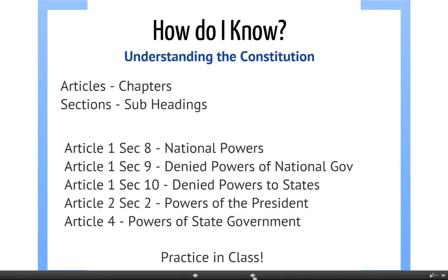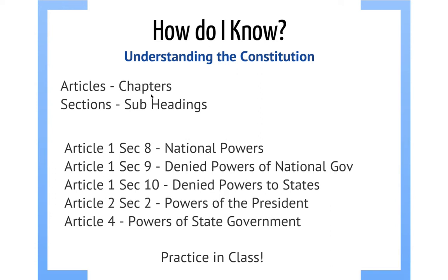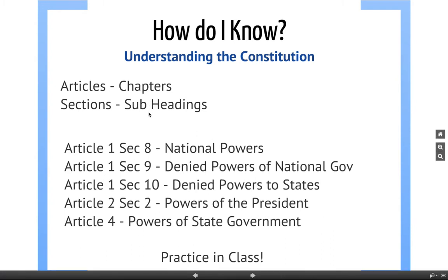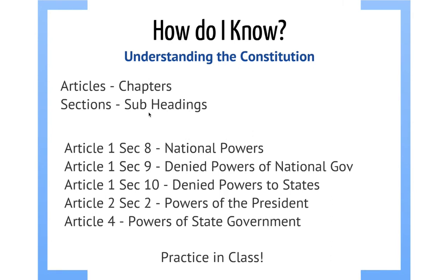If you wanted to look in the Constitution to figure out what part of government did what, the Constitution is organized into things called articles and sections. You can think of an article like a chapter on one specific big topic, and a section is like a sub-chapter — very specific. All the sections in an article are about the same topic. We're going to be looking at five different sections of the Constitution in depth over the next few days.